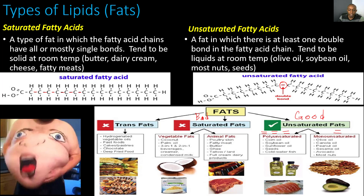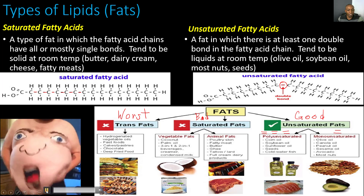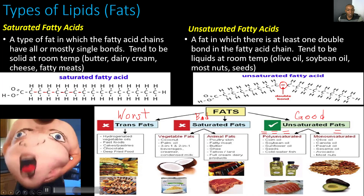Here are steak and hot dogs as examples of saturated fats. The worst type of fat is trans fat — that's the type of fat people get from fast food restaurants such as McDonald's, Checkers, or Burger King. These are the hydrogenated vegetable oils found in fast foods, cakes, pastries, chocolate, and deep-fried food. If you eat a lot of these, you could end up in a bad situation — and last time I checked, nobody wants that.